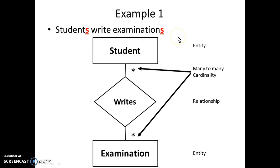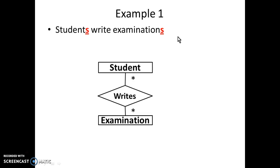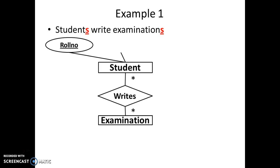Let's take another example — same scenario — but now if we elaborate, an entity can have attributes. For this example we will focus on attributes, and later problems will focus on making entities and relationships. For the student entity, let's make some attributes. One attribute is roll number. Attributes are represented by ovals.